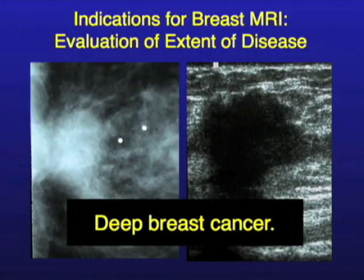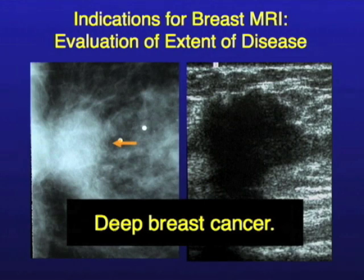This is a mammogram over here. This patient has a known cancer now that we've diagnosed, and this little BB means it's palpable — that means the patient felt it, so the tech puts that on there. Here is the cancer. This is the chest wall or part of the chest wall.